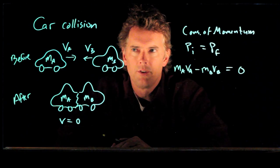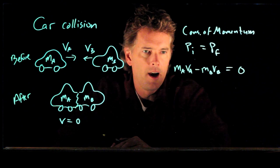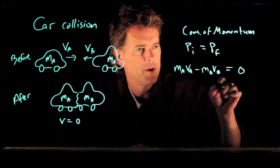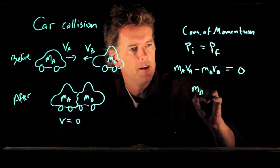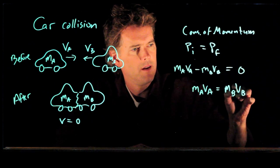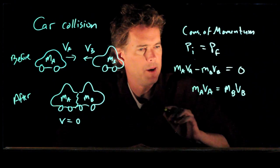So, let's say we want to solve this equation now for VB. How do we do it? Well, we add to the other side this second term. And now we can divide by M sub B.